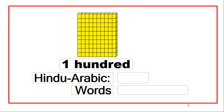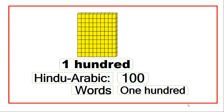Now, if I have one block of one hundred, then I have one hundred. We write it in Hindu Arabic as one, zero, zero. And in words, we write one hundred.